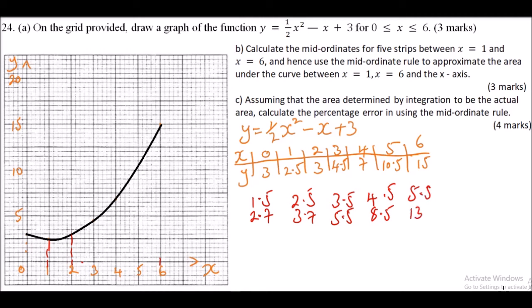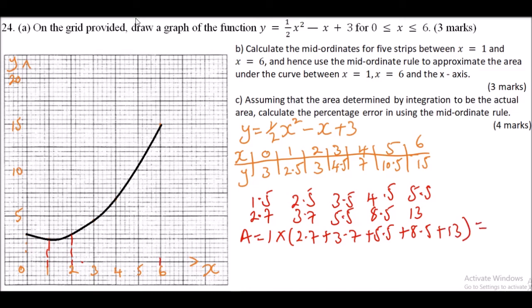Using the mid-ordinate rule: Area = h × (sum of mid-ordinates) = 1 × (2.7 + 3.7 + 5.5 + 8.5 + 13) = 33.4 square units.